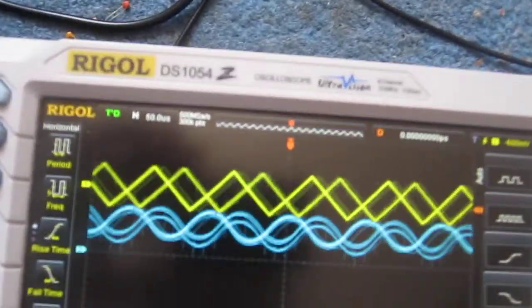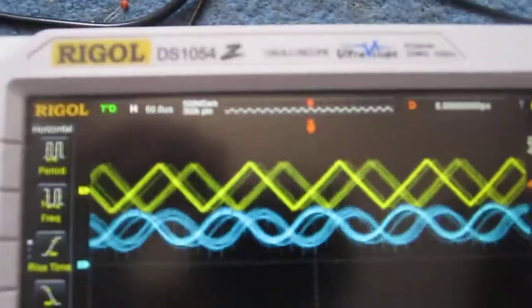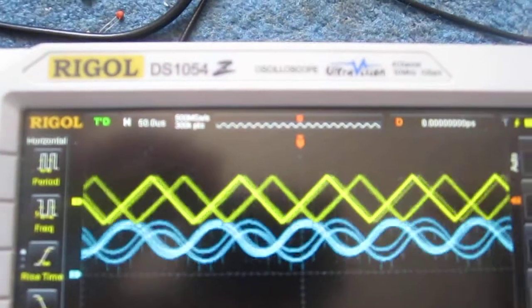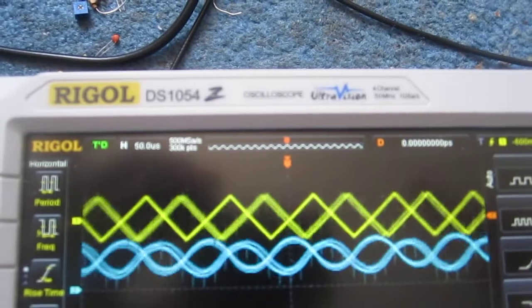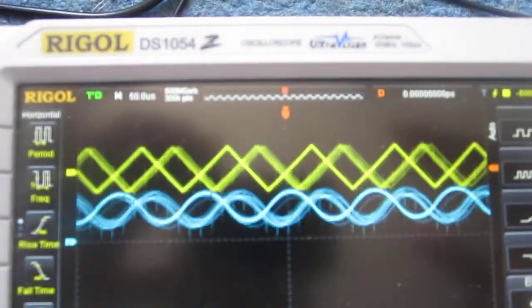You can see now I have a triangle wave as the input and at the output is a sine wave. So if you feed a triangle waveform into an integrator circuit, you should get a sine wave as the output.